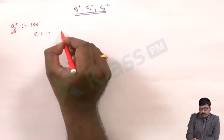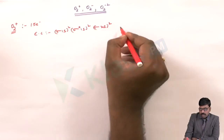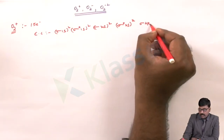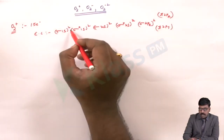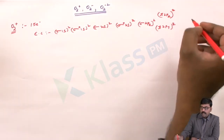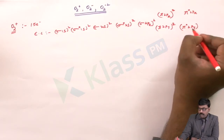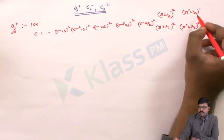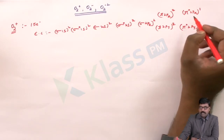The electronic configuration of O2 plus is: sigma 1s2, sigma star 1s2, sigma 2s2, sigma star 2s2, sigma 2pz2, pi 2px2, pi 2py2 — that accounts for 10 electrons. Then pi star 2px and pi star 2py. The normal O2 molecule has pi star 2px1 and pi star 2py1; for O2 plus we remove one electron, so one of those antibonding orbitals has 1 electron and the other has 0.